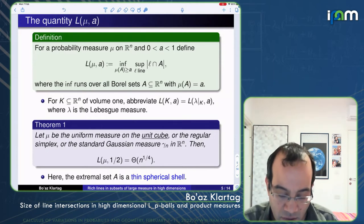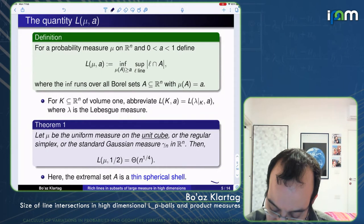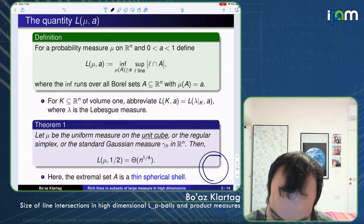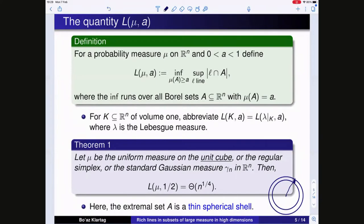Where does n^(1/4) come from? For the Euclidean ball the thin shell had width (1/n)·R. For the cube, simplex, or Gaussian, there is also a thin spherical shell capturing most of the mass, but its width is (1/√n)·R instead of (1/n)·R. When you compute via the curvature of the sphere, you get n^(1/4). And as it turns out, this is sharp up to a constant — you cannot do better than n^(1/4).